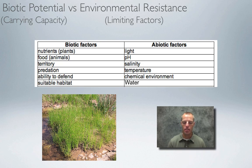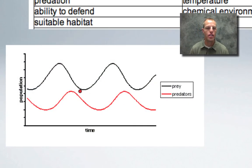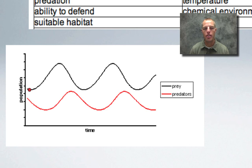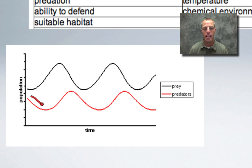If it stopped raining for a year, water would become a limiting factor because it's the resource in short supply — the plant can't reach its potential. Another example is predator-prey relationships. In this diagram, the prey (black line, like a rabbit) and predator (red line, like a wolf) are both low. A low prey population is a limiting factor for the wolf, so we see a decline in the wolf population.